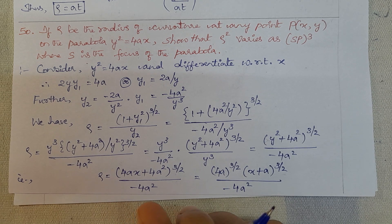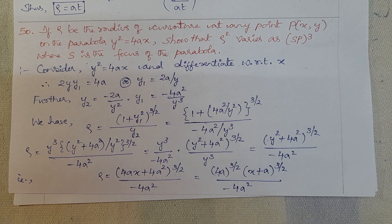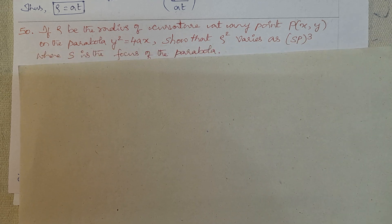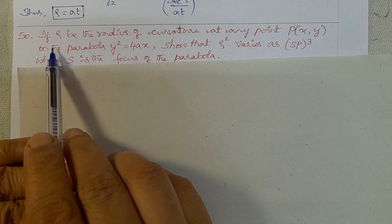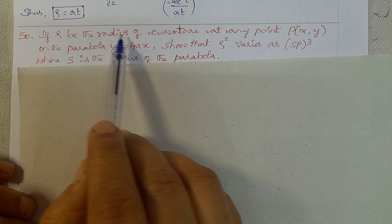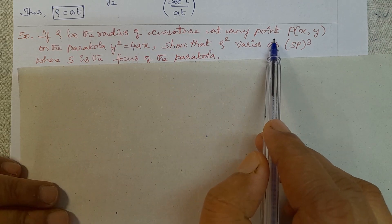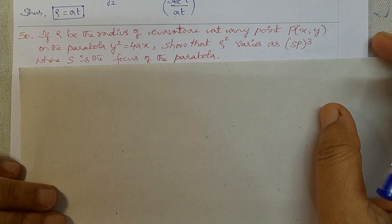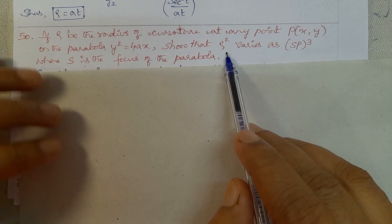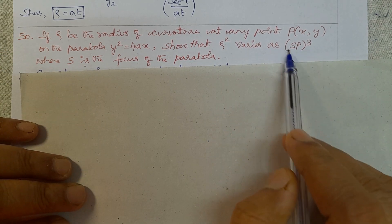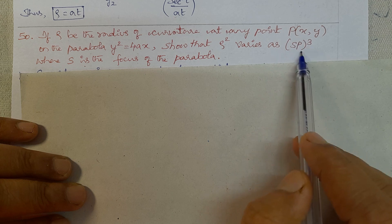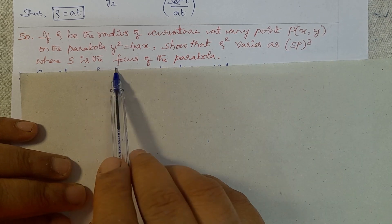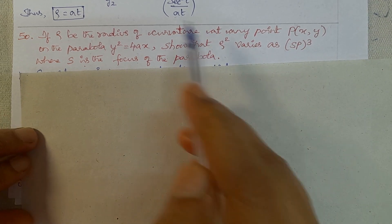Namaste. Engineering Mathematics Module: Differential Calculus 1, Article: Radius of Curvature, Problem Number 50. If ρ be the radius of curvature at any point P(x, y) on the parabola y² = 4ax, show that ρ² varies as SP³, where S is the focus of the parabola.